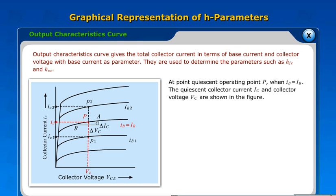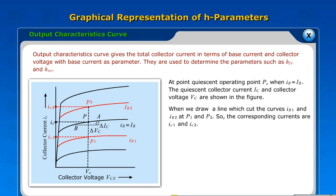At quiescent operating point P, when IB equals IB, the quiescent collector current IC and collector voltage VC are shown. When we draw a line which cuts the curves IB1 and IB2 at P1 and P2, the corresponding currents are IC1 and IC2.